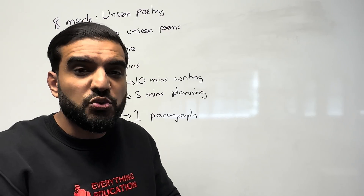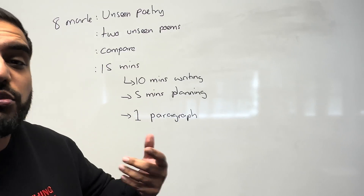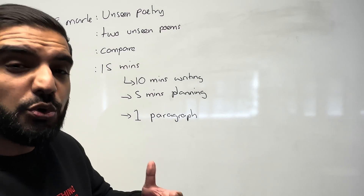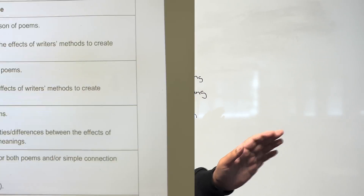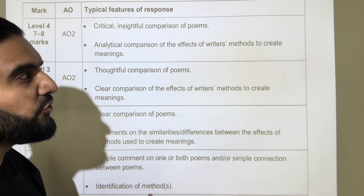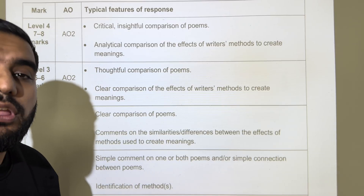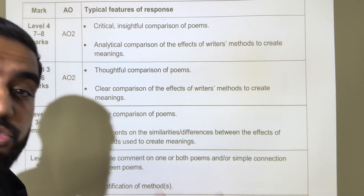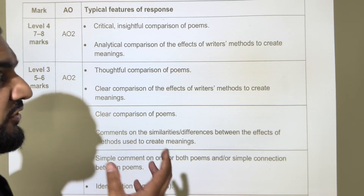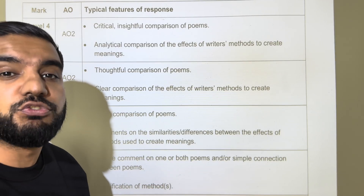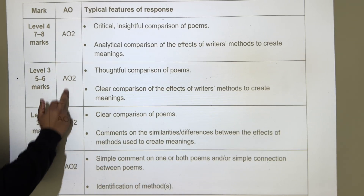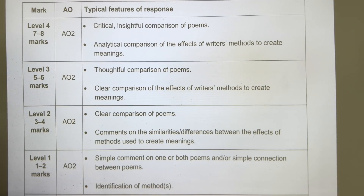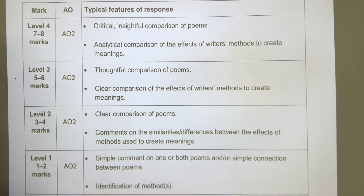The paragraph structure came from going through lots of different model answers and the mark scheme. Before we look at the paragraph structure, let's look at the mark scheme. After looking at AO1, AO2, and AO3 for English literature, this mark scheme is quite refreshing — you are only marked on AO2 when it comes to unseen poetry.